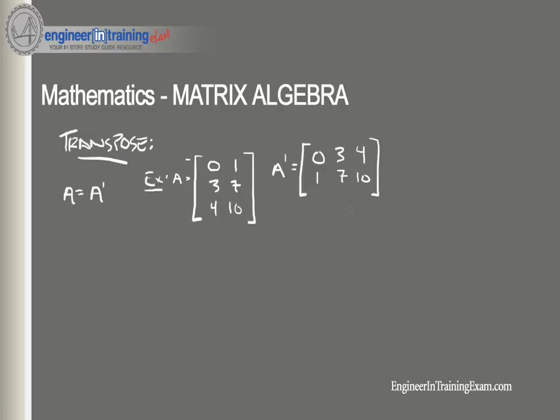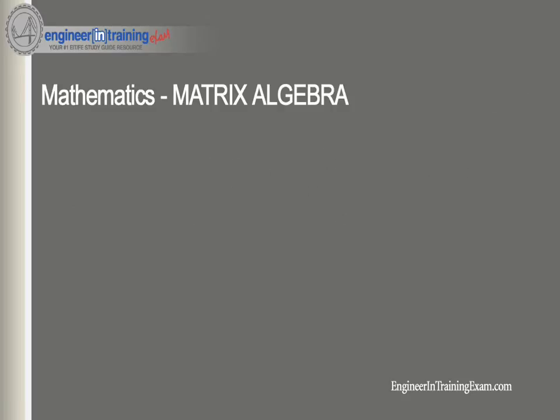So what about the determinant of a matrix? What is the determinant and what does that mean? Well, the determinant is a unique number associated with a square matrix. So we're dealing with n by n square matrices here.